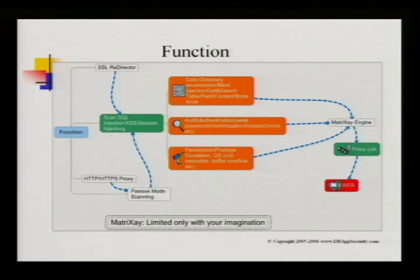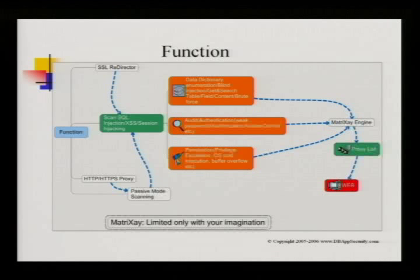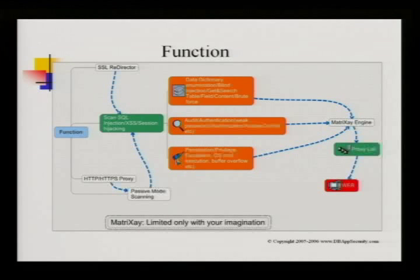Here's the mind manager function diagram. You can configure your browser to point to the port that Matrix will listen on. Matrix will monitor the session and traffic automatically, and detect if the URLs you browse are vulnerable. Of course, you can also directly target a web URL and gain all the vulnerability information, then get the database dictionary, do blind injection, search interesting tables, and brute force. You can also audit authentication, authorization, and do penetration testing for specific spots like privilege-on-privilege escalation.